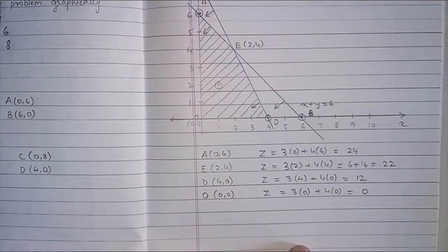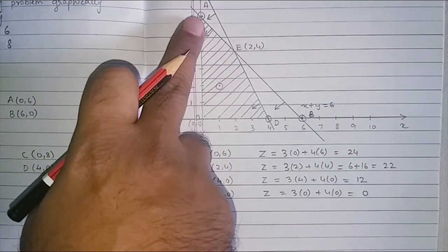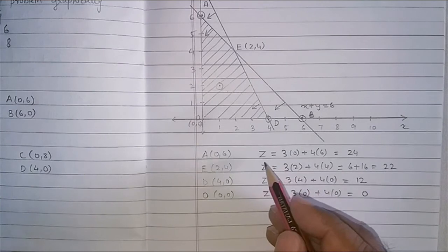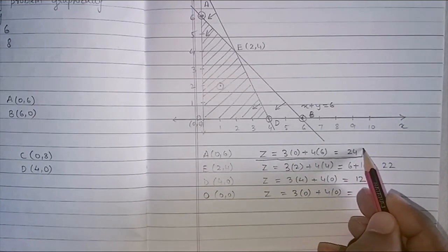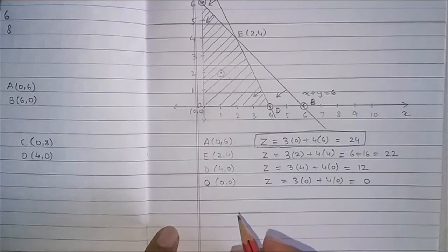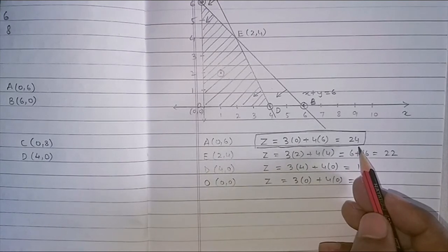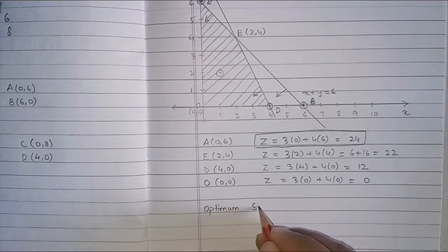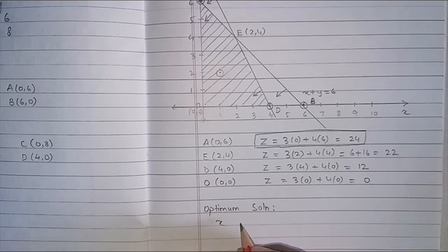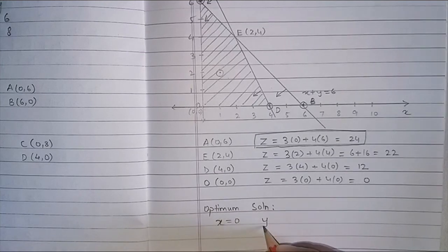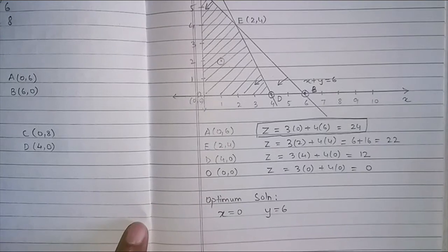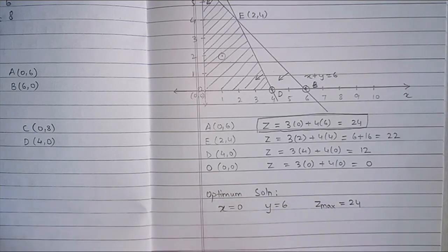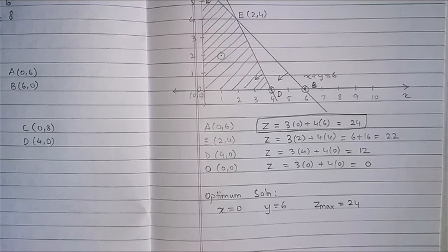Now, look at the answers which we have got for the different points which we considered on the borders. We considered A, E, D and we also considered the origin O, 0 comma 0. The maximum value is for point A. Now, because A is giving you the maximum profit, the maximum value for Z, my optimum solution is X will be 0 and Y will be 6 which will give me Z max or maximum Z as 24.